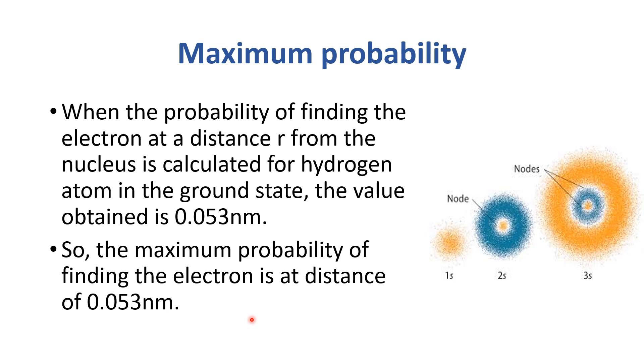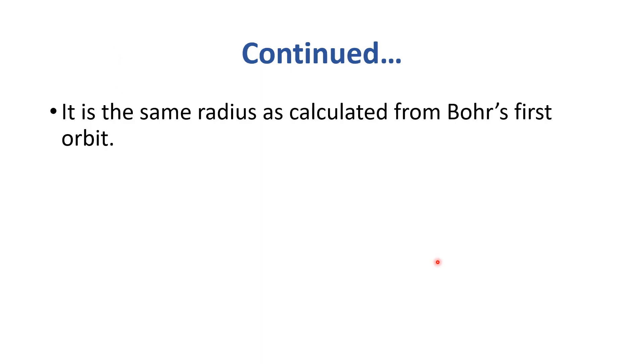So it is approximately equal to the radius of the first orbit of hydrogen. So it is the same radius as calculated from Bohr's first orbit.